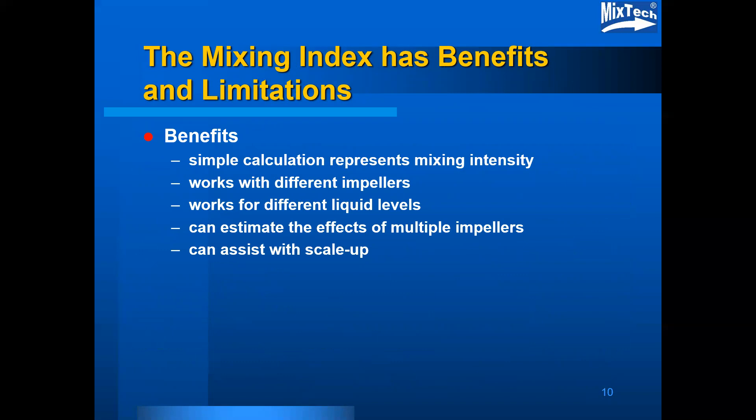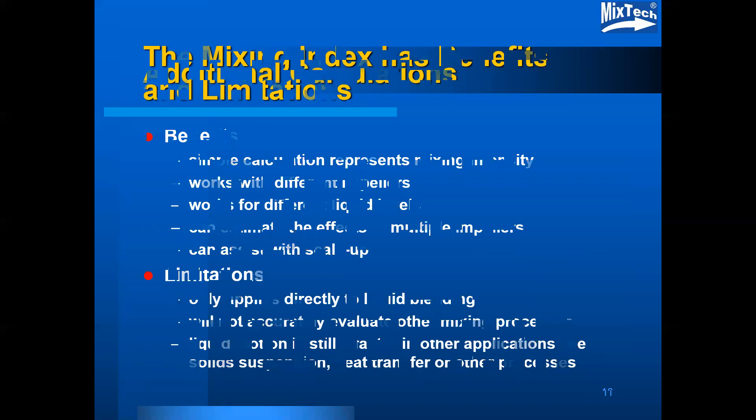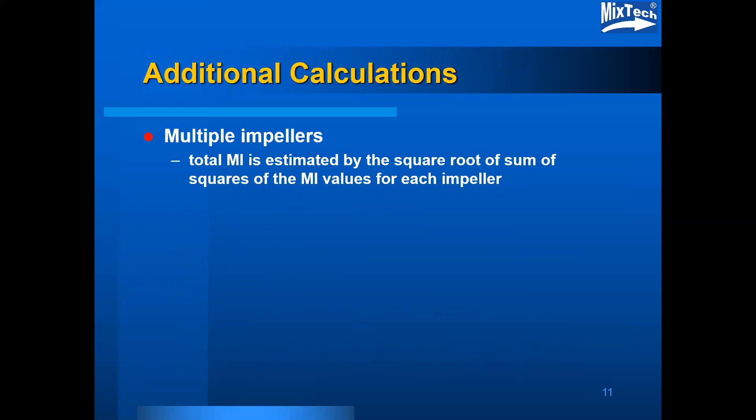There are benefits and limitations to the mixing index. The benefit is a simple calculation representing a mixing intensity. It works for different impellers because the power number is used in the calculation. It works for different liquid levels because the volume adjusts for that. It can estimate the effect of multiple impellers and it can assist with scale-up. Some limitations are that it only applies directly to liquid blending, but liquid motion is still a factor in other applications like solid suspension, heat transfer, or other processes, and so the mixing index provides some level of guidance as far as intensity is concerned.